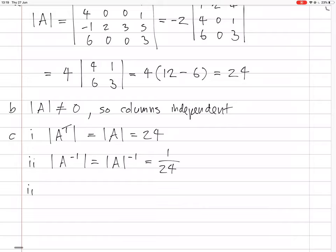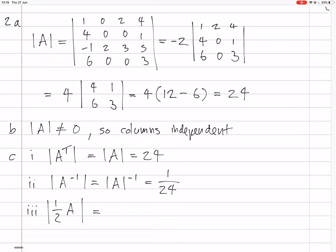Finally, they want the determinant of half A. That depends on the number of rows — you're multiplying every row of A by one half. There are four rows, so you bring out a factor of one half four times, giving (1/2)^4 = 1/16. So the determinant is (1/16) × 24 = 24/16, which simplifies to 3/2.